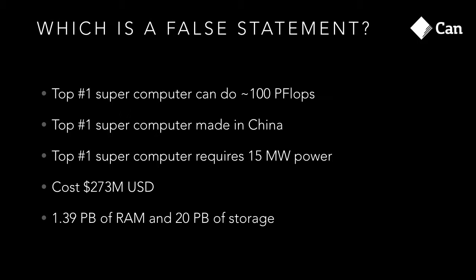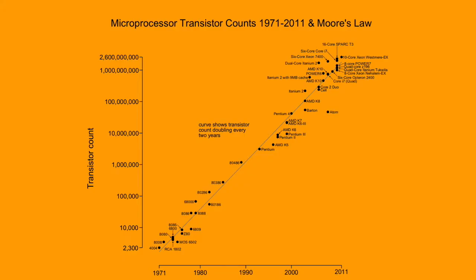The majority got it right — it's number three that's false. This supercomputer has an unpronounceable Chinese name, but it's known to be the most energy-efficient supercomputer. In fact it can do about 100 petaflops at peak performance. The cost of building it is quite significant — none of us will likely work on this kind of computer. And the amount of storage is amazing — all of Netflix could fit in there.